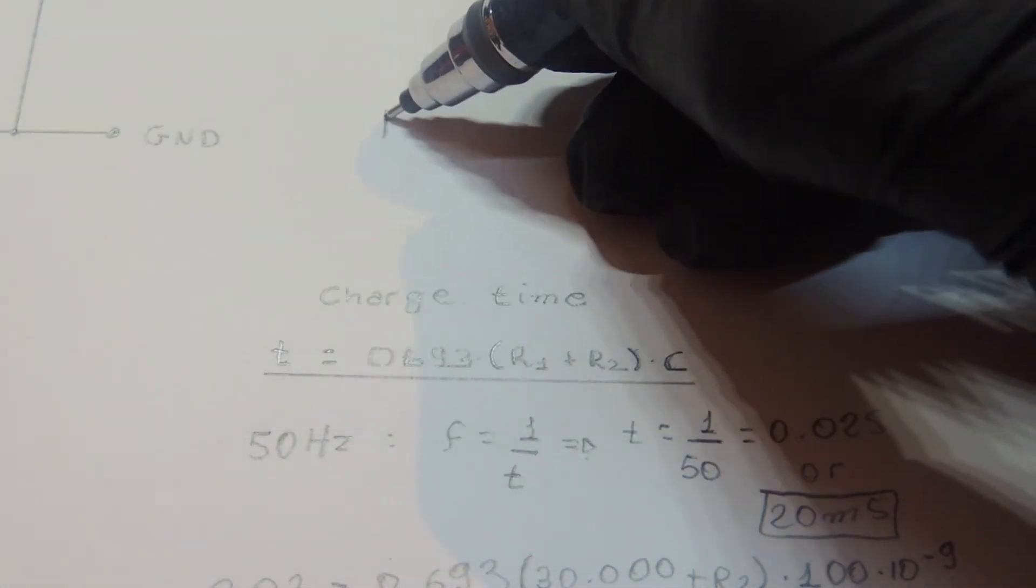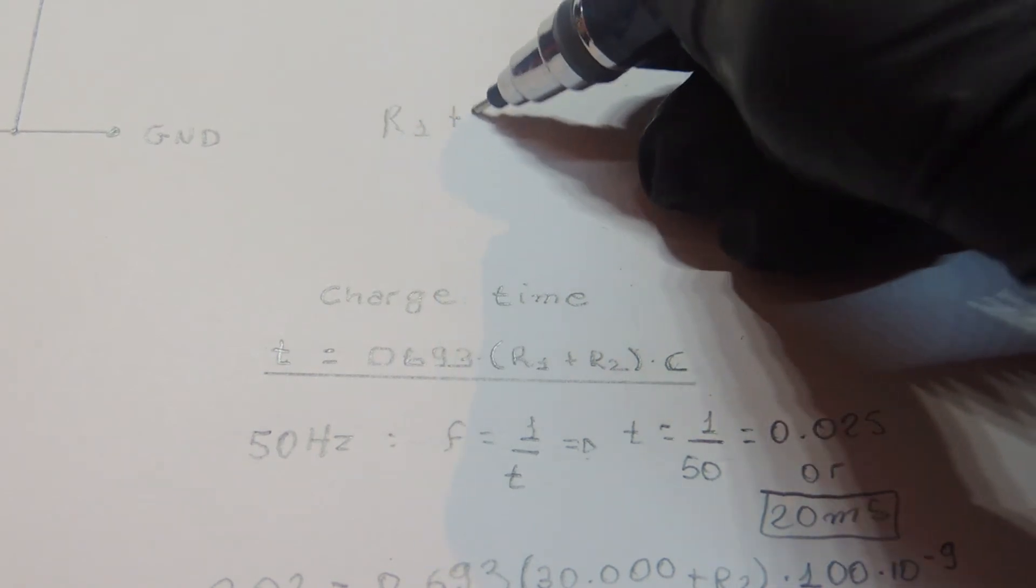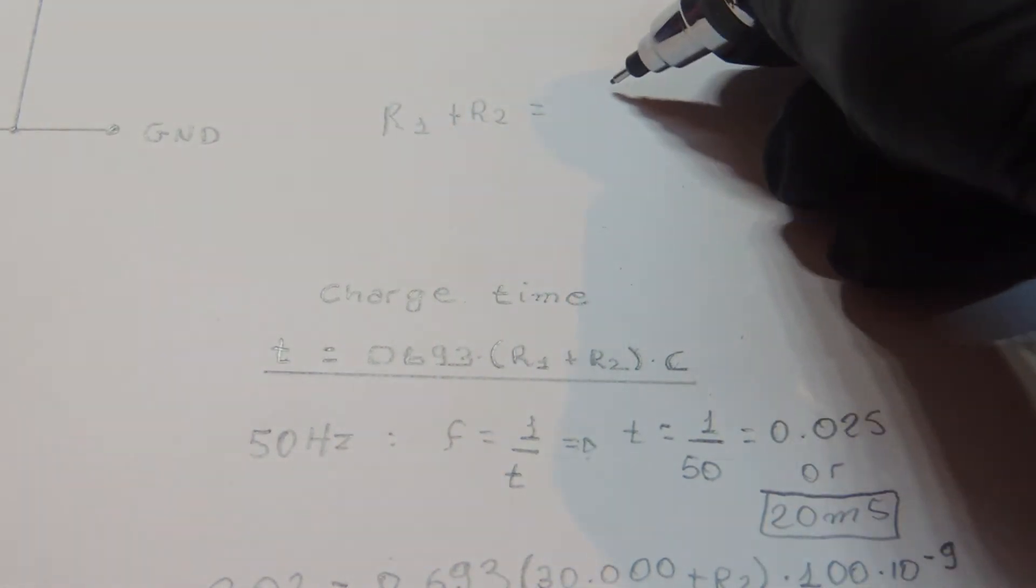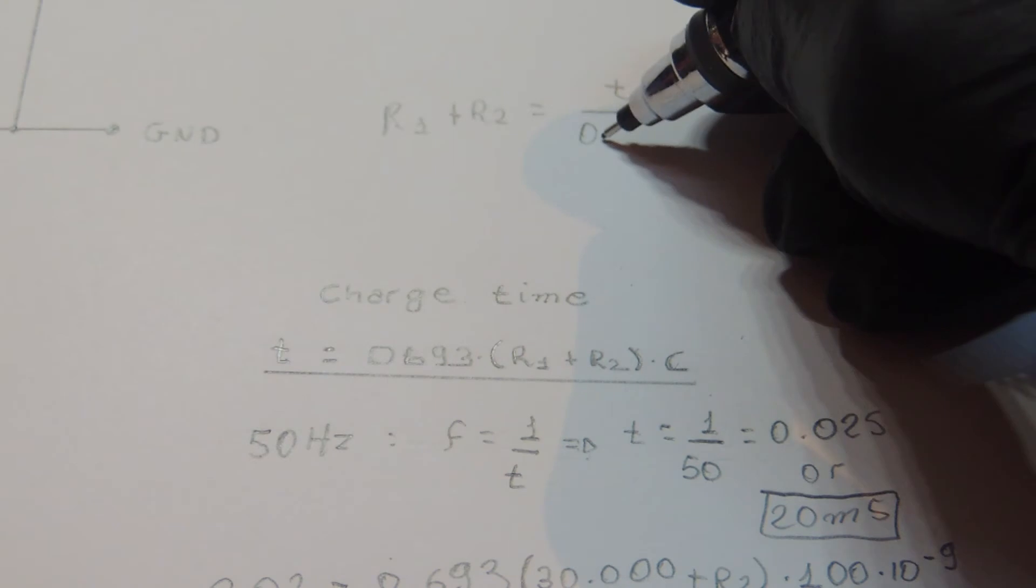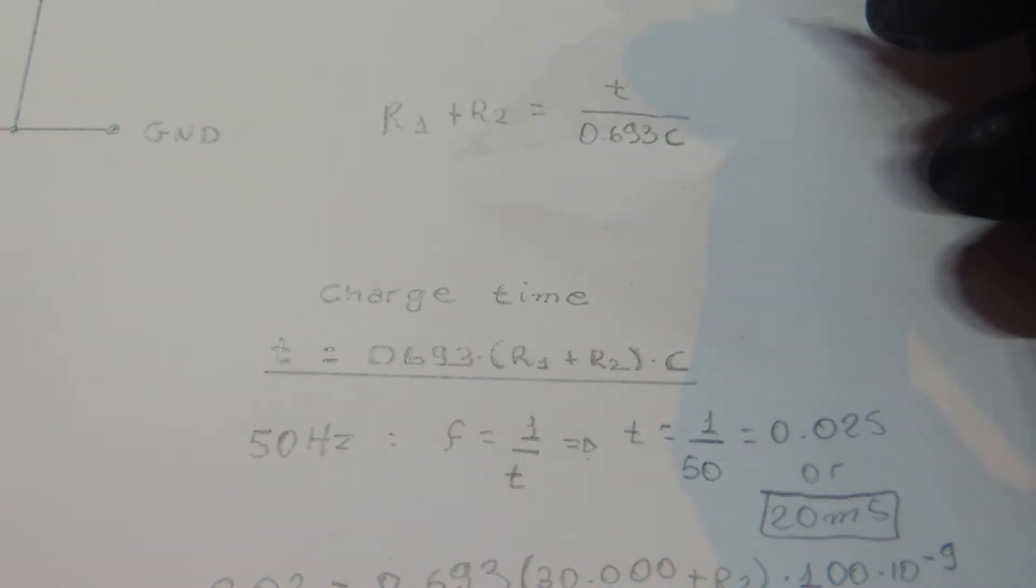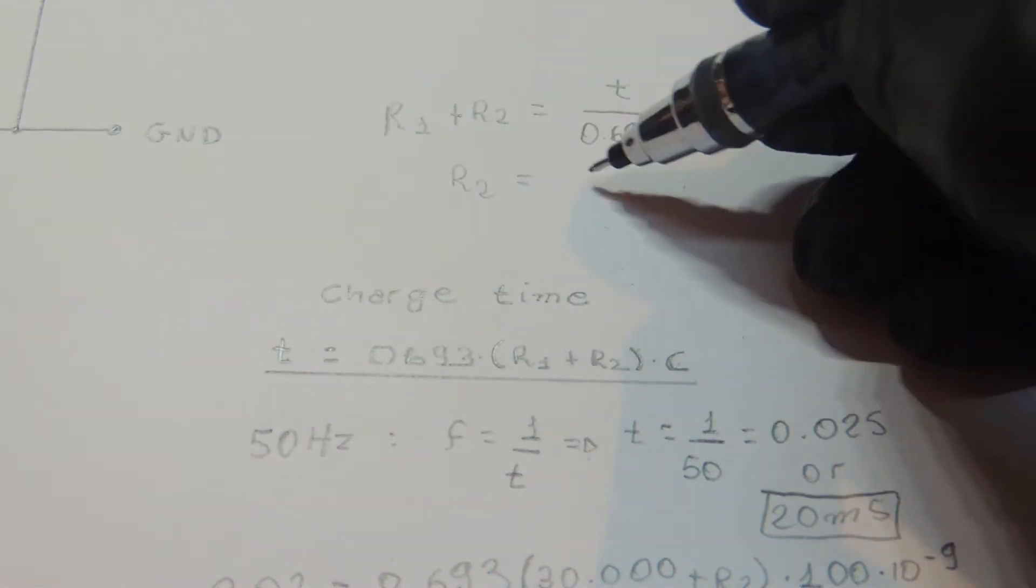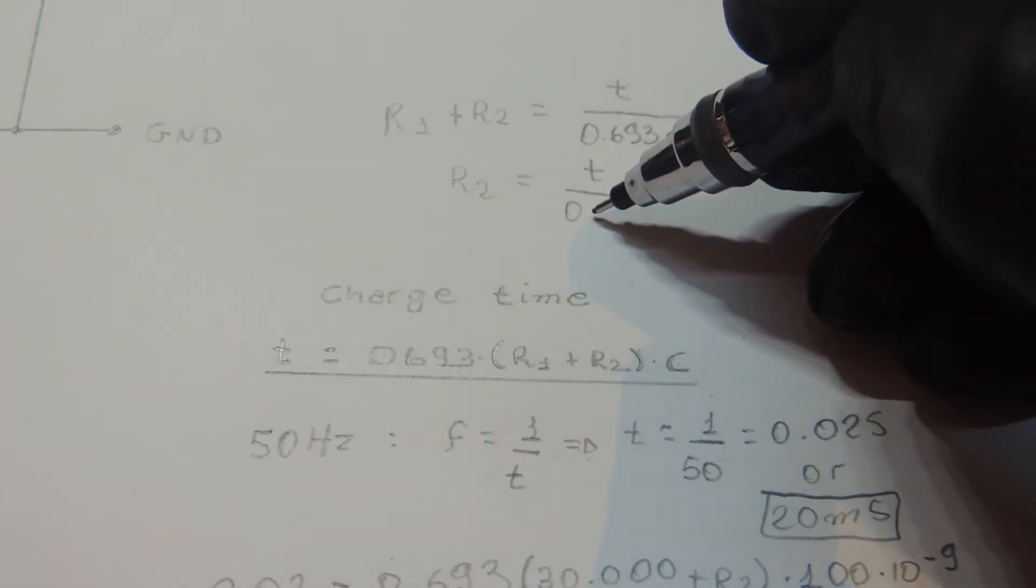To analyze how changing values can affect the signal we get in the end, let's rearrange this formula and see, for example, what happens when we change the value for R2. So R2 is given by this formula.